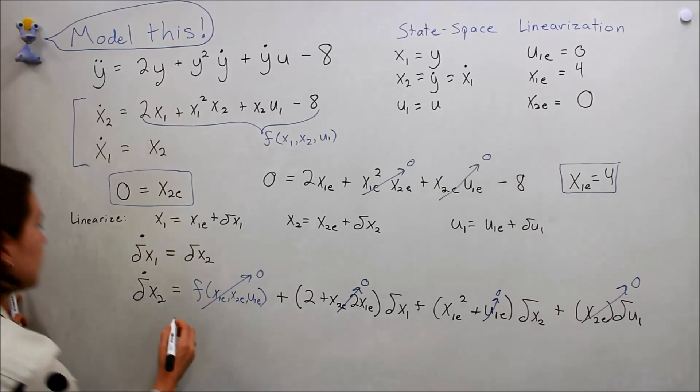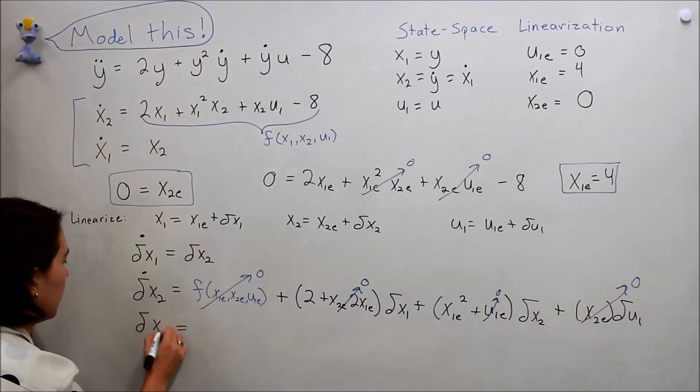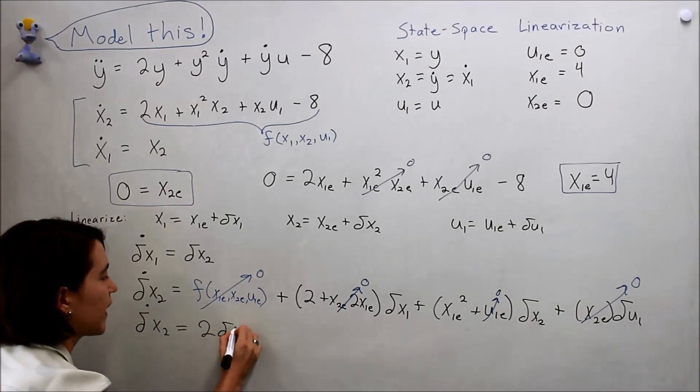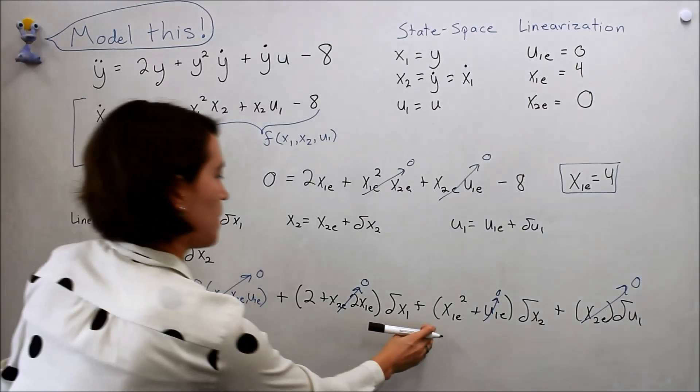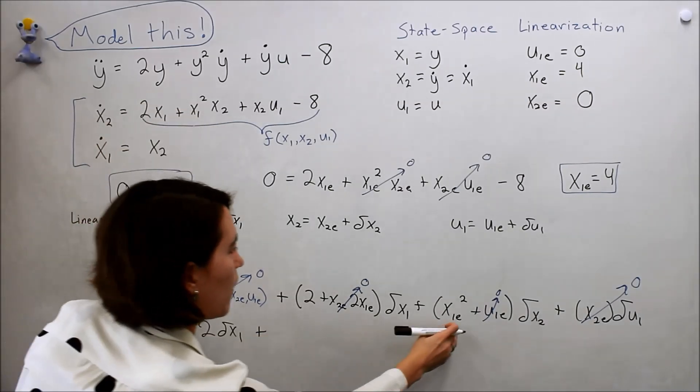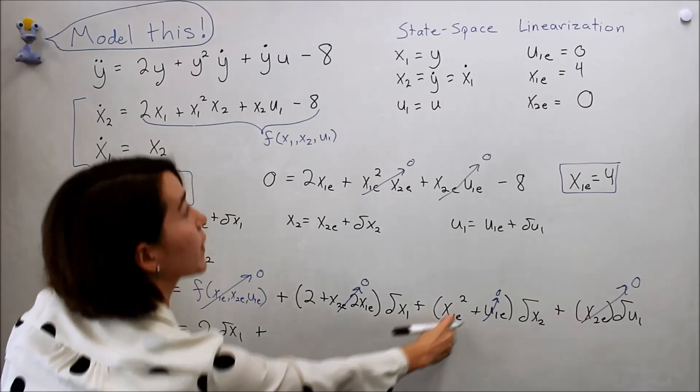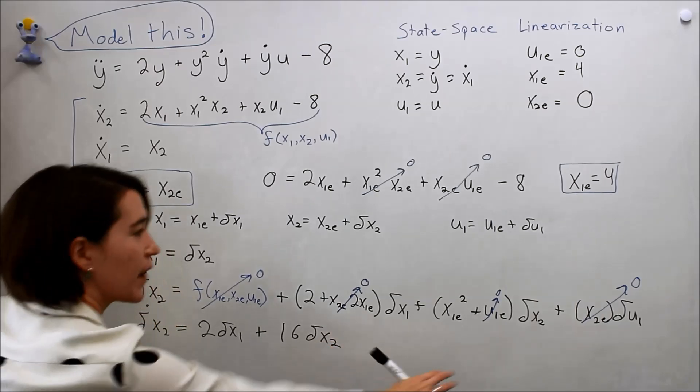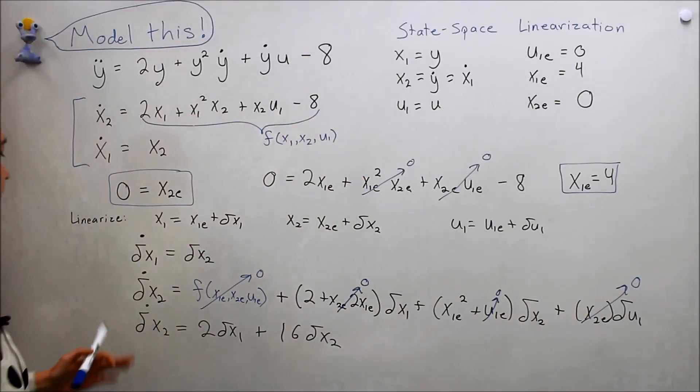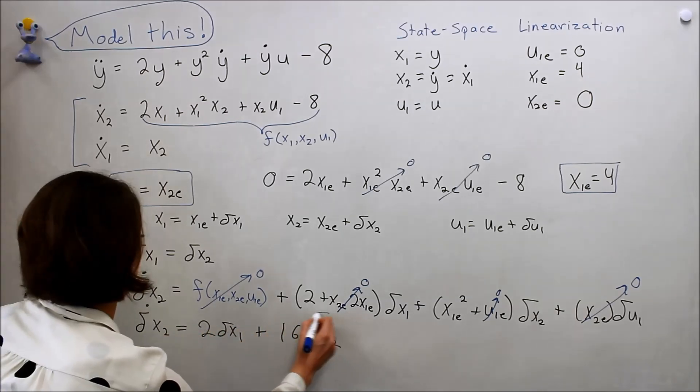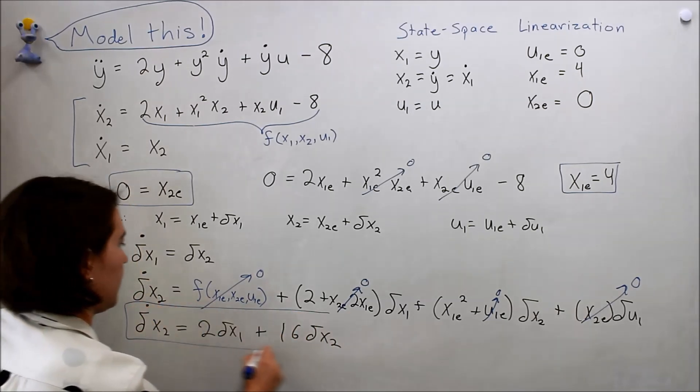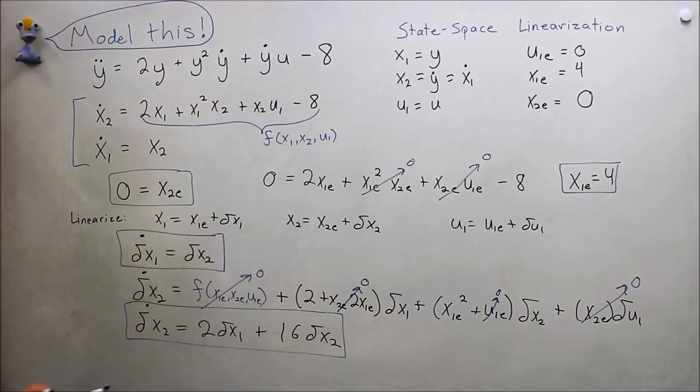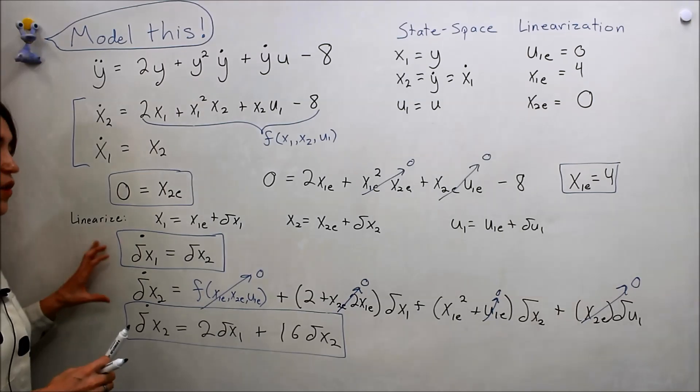So what are we left with? We have 2 delta x1 plus x1e, which is 4, so 4 squared is 16, delta x2. And we have a zero here, so this would be our linearized version of the x2 perturbation, and this is our linearized version of x1. So these would be the equations, and then we can put it into our standard form.